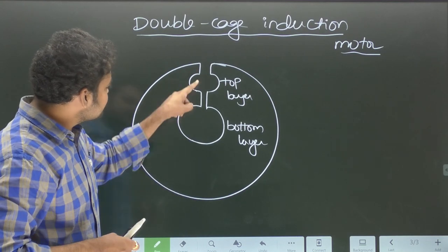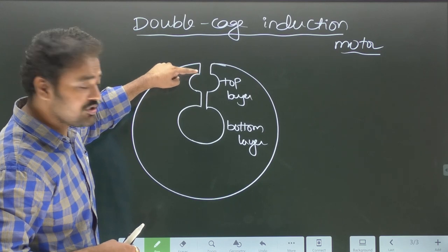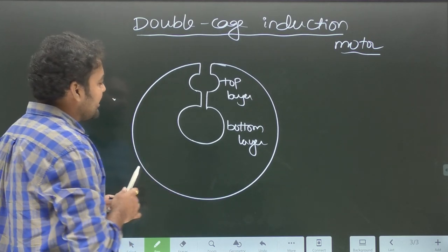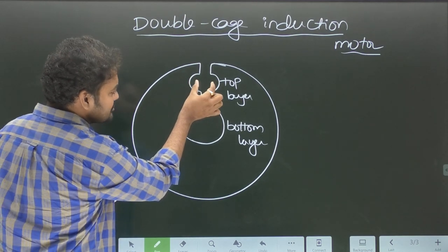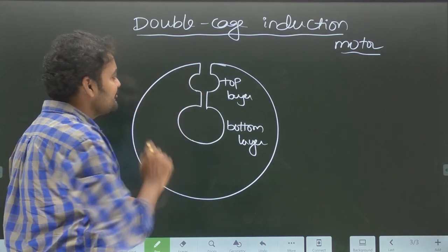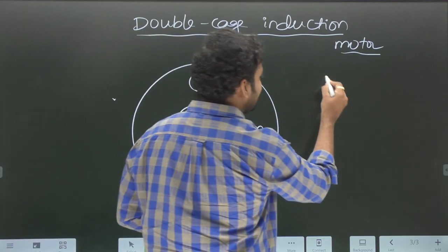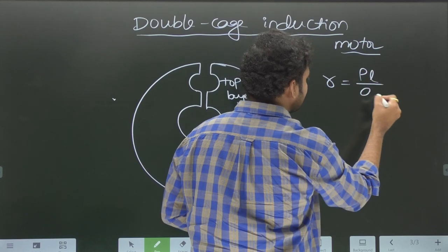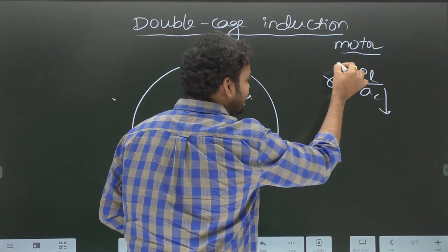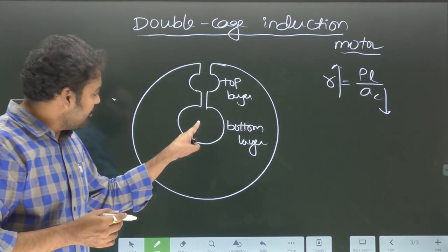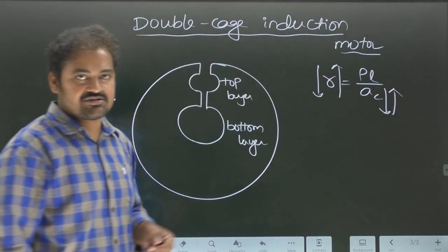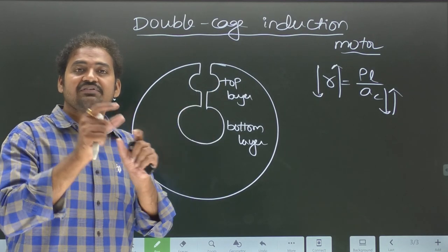The slot consists of two layers — one is the top layer of the rotor and another is the bottom layer. The top layer has less cross-sectional area and the bottom layer has more cross-sectional area. This is to create a resistance difference between the top layer and bottom layer. We know that resistance offered by any conductor is ρL divided by cross-sectional area. So the conductor in the top layer offers higher resistance, and the conductor in the bottom layer offers less resistance.